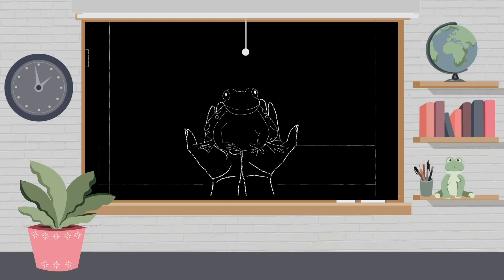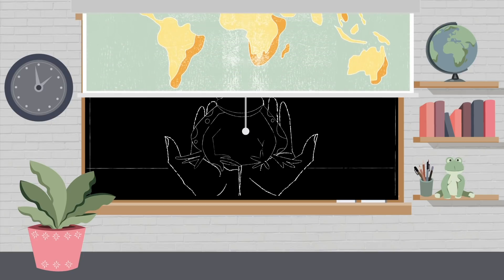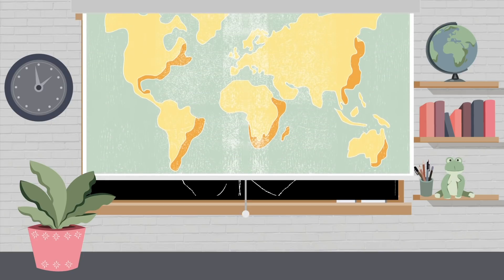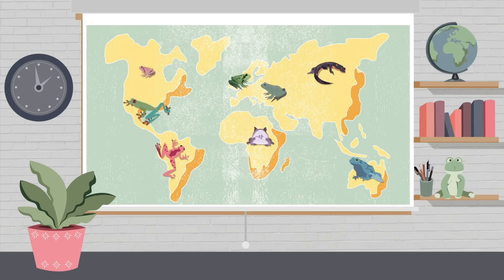Unfortunately, amphibians are facing a number of threats and challenges. They are the most threatened group of vertebrates on the planet, and ranaviruses is capable of driving populations to extinction.